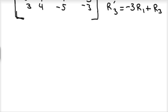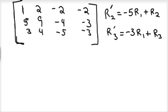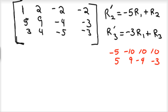If I take negative 5 times row 1, you'd have negative 5, negative 10, positive 10, positive 10. And we're going to add that to row 2, which is 5, 9, negative 4, negative 3. You add those down and you get 0, negative 1, 6, and 7.